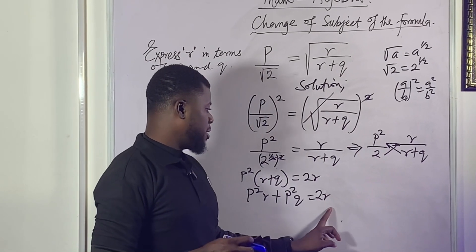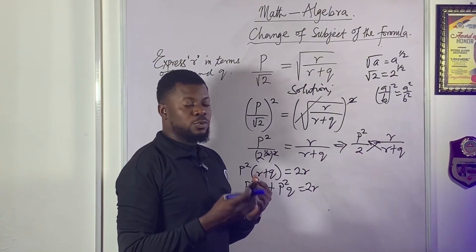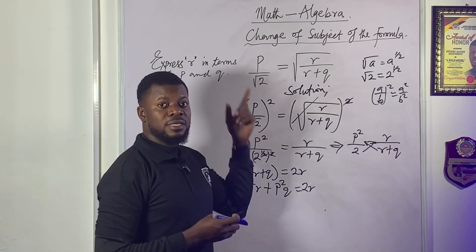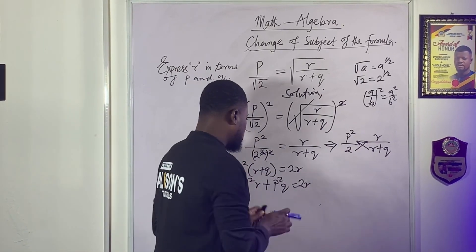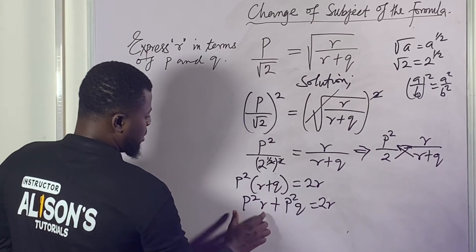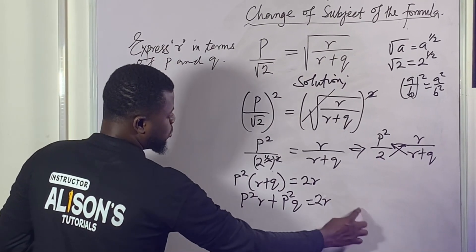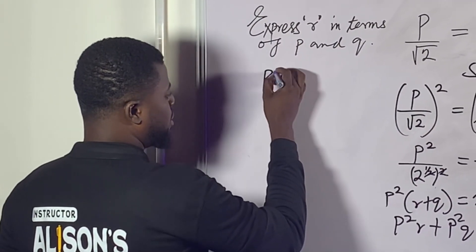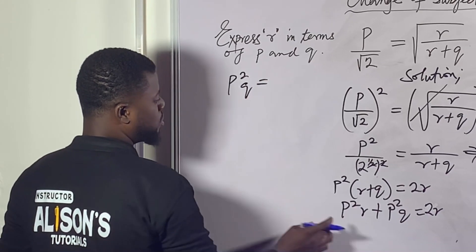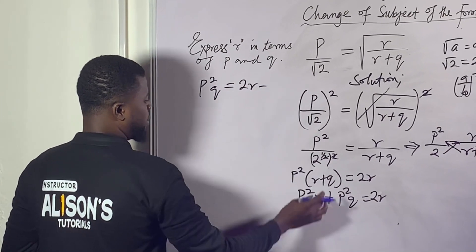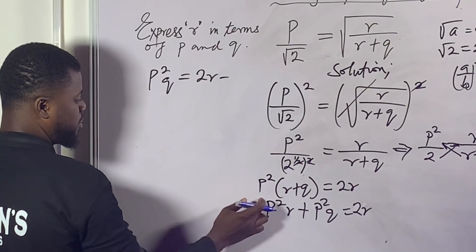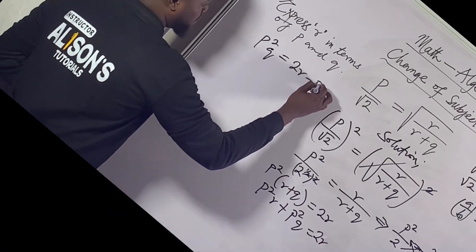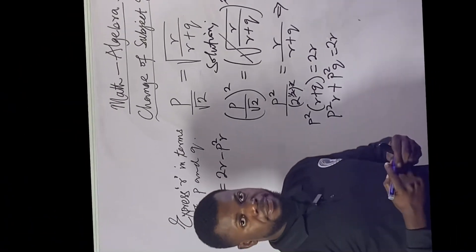We have arrow here and arrow here, so we need to collect like terms. We want to express arrow in terms of p and q. Let's take this p squared arrow across to the right side of the equation. What's left on the left is p squared q, and on the right we have 2 arrow minus p squared arrow — because when a positive term crosses over, it becomes negative.